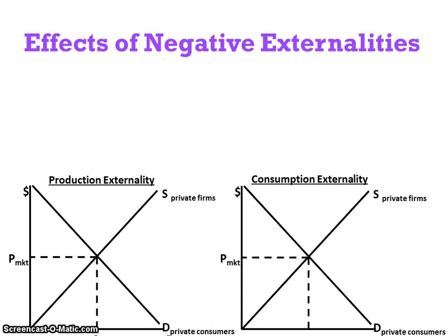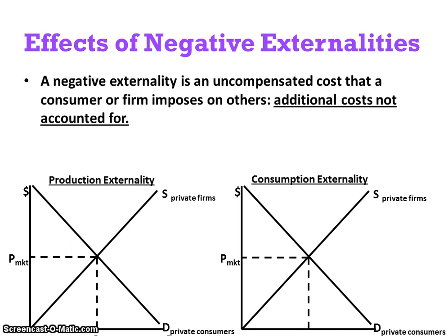A negative externality is an uncompensated cost that a consumer or firm imposes on others, and the additional costs are not accounted for. For example, if you walked into the classroom and someone had just released a stink bomb, that would have negative external effects — it would affect you even though you're not the one who released it. Negative externalities have costs imposed on other people that the producer and consumer don't account for when determining how much of the good or service to produce and consume.